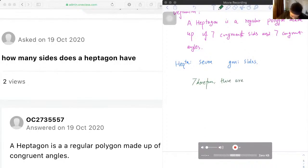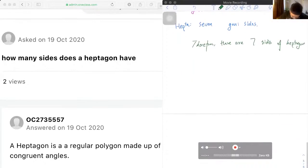there are seven sides of a heptagon. And the diagram should look like this.